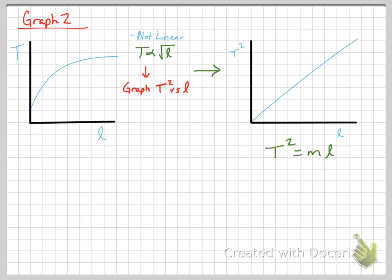This is a very important skill to have, the skill of linearizing graphs. It's able to recognize the relationship from the shape of the graph and turn it into a linear by taking the data set and either squaring it or square rooting it or whatever we may need to do.